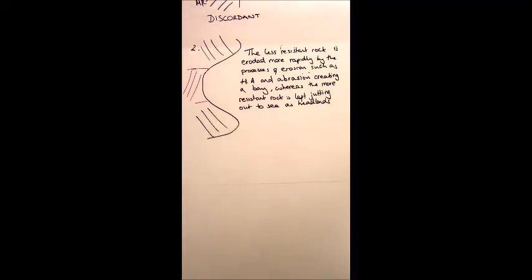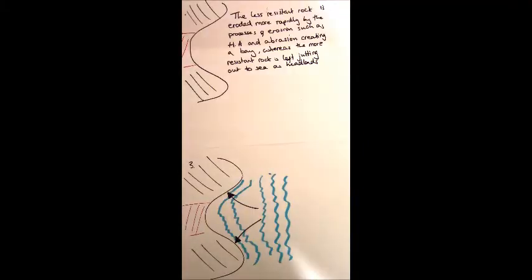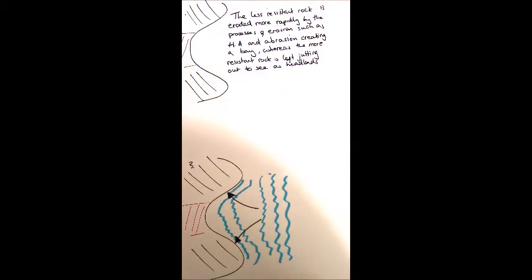But actually, the sequence of headland and bay formation does carry on for a little bit. You know, we want to make sure we're achieving those four marks, so we want to consider what happens after this has developed. What we need to consider is actually what now happens to the wave energy in this landscape. As the waves approach the shoreline, they will be approaching normally, kind of parallel to the coastline, with the wave fronts in a straight line like we've got here.